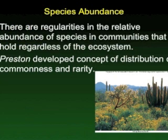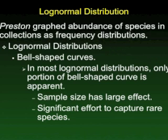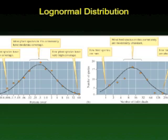In looking at communities and the relative abundance of different species, Frank Preston, way back in 1948, developed a series of graphs describing the relative abundance of rare and common species in an environment. This led to the development of the log-normal distribution. If you look at figure 16.3, you can see that the percent of coverage for trees demonstrates that most plant species in a community have a moderate level of coverage. Similarly, most bird species are moderately abundant.